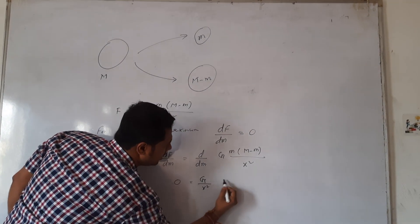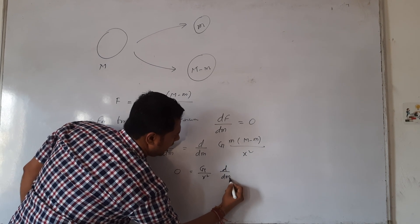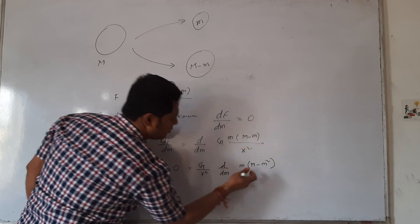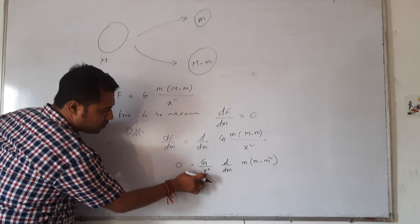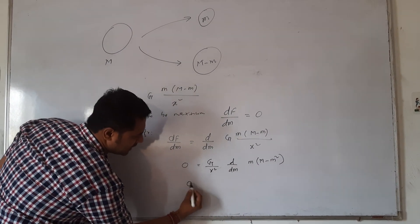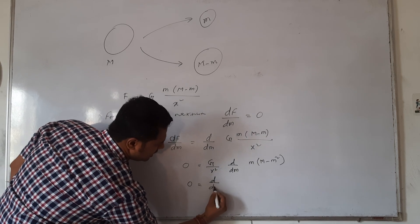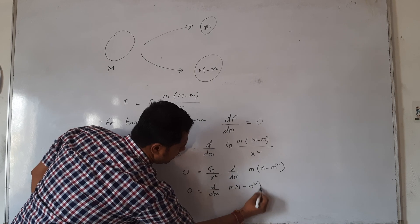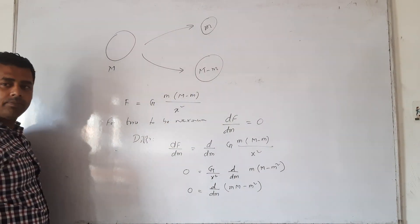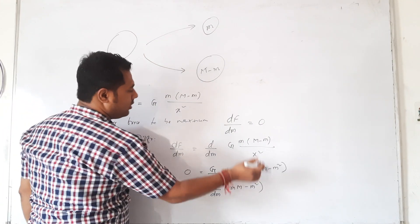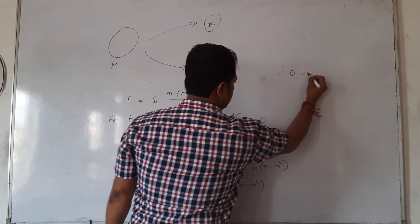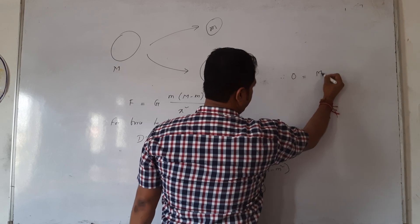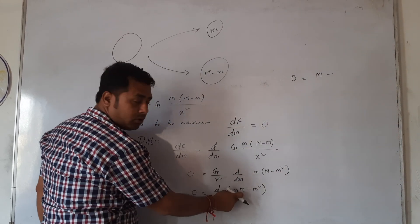So differentiating: d/dm of (M m minus m squared) equals zero. Since x squared is a constant it cancels out. So 0 equals d/dm of M m minus d/dm of m squared.